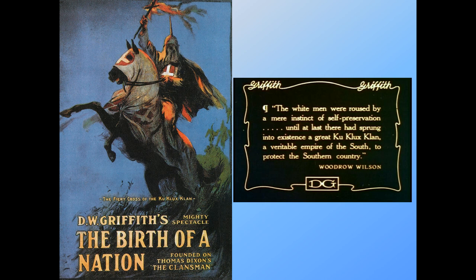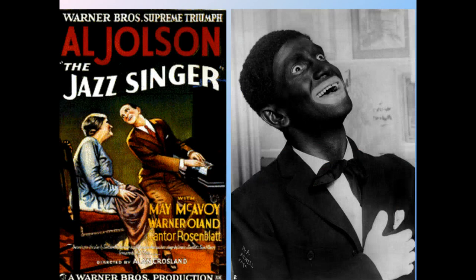We've talked about Birth of a Nation several times. When you watch this film, the representation of African Americans is quite challenging. From a title card quoting Woodrow Wilson within the film: 'The white men, roused by a mere instinct of self-preservation, until at last there had sprung into existence a great Ku Klux Klan, a veritable empire of the South to protect the Southern country.' This idea that the South needs to be saved from African Americans is a very strong sentiment that rose up after Reconstruction and throughout the early 1900s. We also mentioned The Jazz Singer, where Al Jolson performs in blackface — we're moving into film in the 1920s, less than 100 years ago, and these are still ways in which African Americans are depicted.